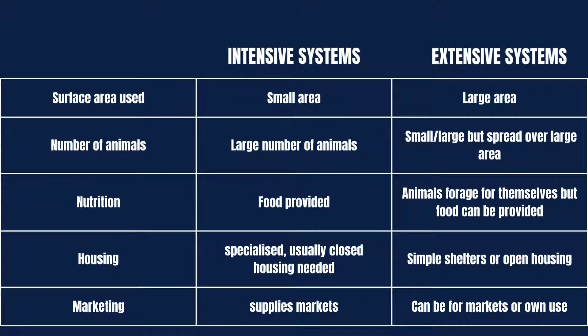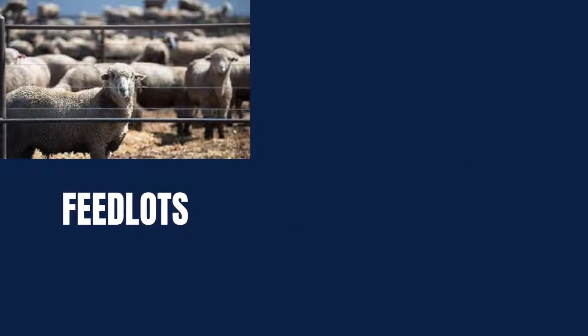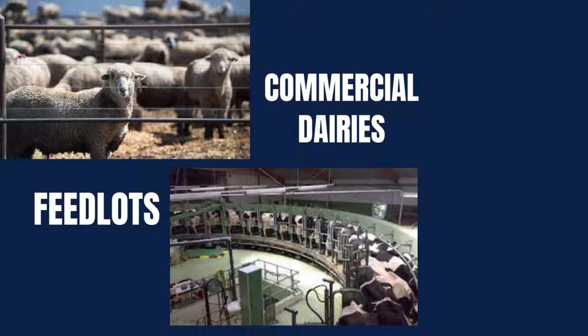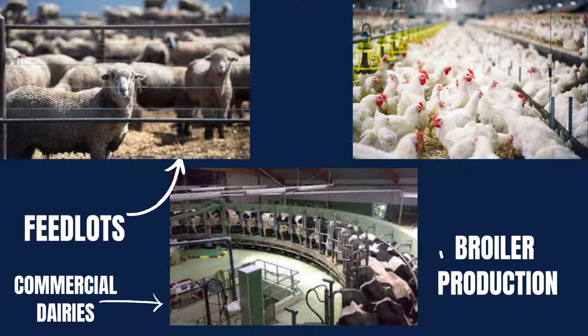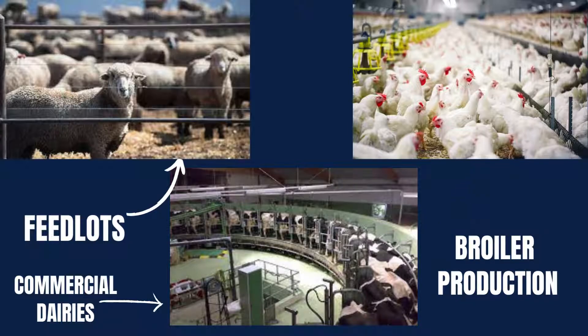Now let's take a closer look at some examples of intensive production. These include feedlots, where sheep and cattle are kept in enclosed areas, fattened, and made ready for the market. We also have commercial dairies where large scale milk production is done, and broiler as well as layer production, where chickens are raised in specialized poultry houses.